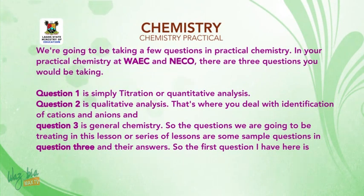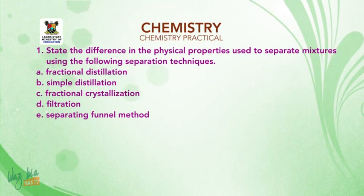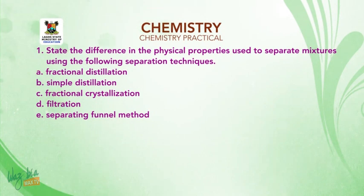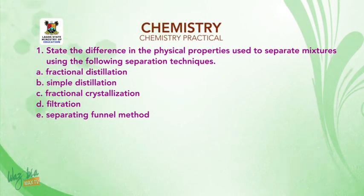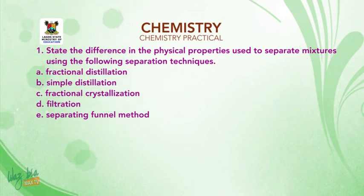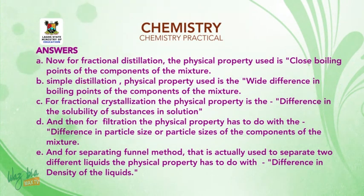The first question: state the difference in the physical properties used to separate mixtures using the following separation techniques — A: fractional distillation, B: simple distillation, C: fractional crystallization, D: filtration, E: separation funnel method. For fractional distillation, the physical property used is closeness in the boiling points of the components of the mixture. For simple distillation, the physical property used is the wide difference in boiling points of the components of the mixture.